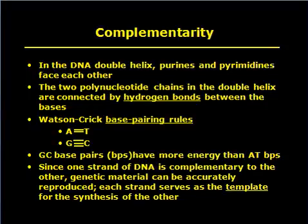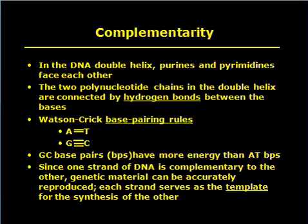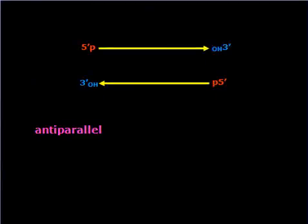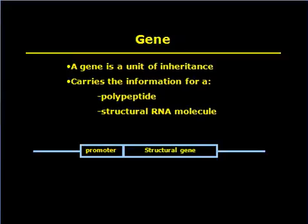The two polynucleotide chains in the double helix are connected by hydrogen bonds between the bases, following Watson and Crick base pairing rules. GC base pairs have more energy than AT base pairs. Since one strand of DNA is complementary to the other, genetic material can be accurately reproduced, with each strand serving as the template for synthesis of the other. The strands run 5 prime to 3 prime and 3 prime to 5 prime — antiparallel.